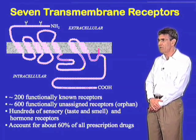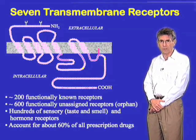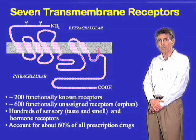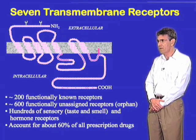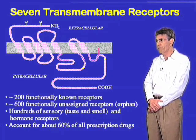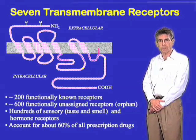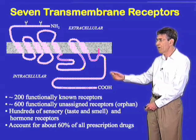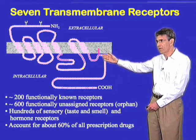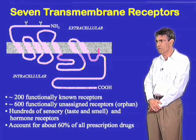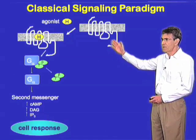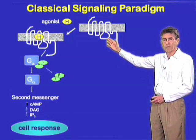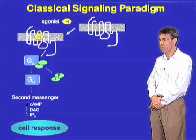What makes this family of receptors even more important is their central place in modern pharmacotherapy of human illnesses. It's said that somewhere north of 50% of all prescription drugs sold in the world today are drugs which function as agonists or antagonists for various members of this family of receptors. Let's take a moment to review some of the basic characteristics of how the seven transmembrane or G-protein coupled receptors function.